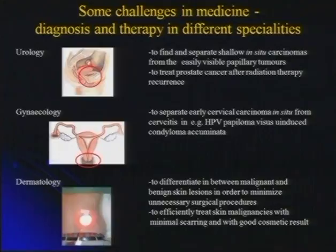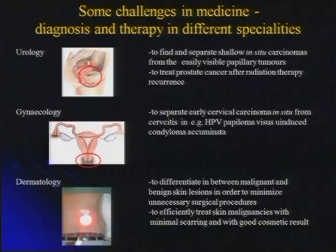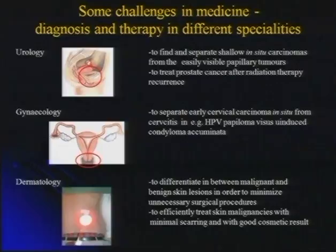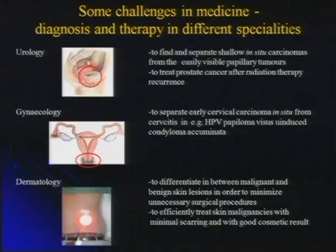From a urology perspective, the more common tumors are the papillary growing tumors, which look like mushrooms or seagrass and are easy to see. But flat, small tumors in situ behind or nearby these are easy to overlook, and these are the life-threatening ones. The papillary tumors can be removed and usually recur, but you can remove them again. The flat in-situ carcinomas grow downward through the muscular layer and are life-threatening.